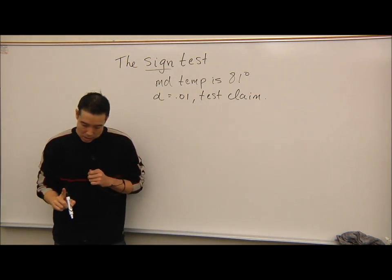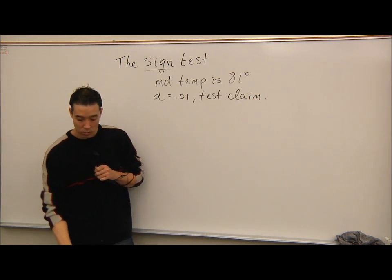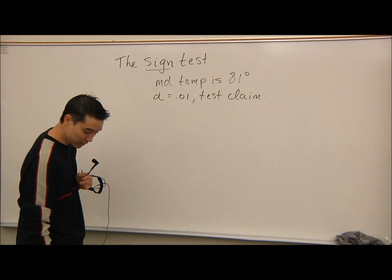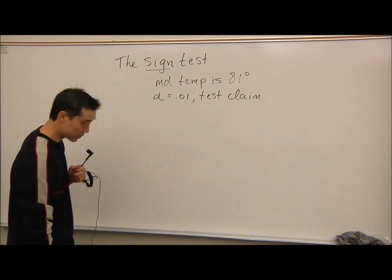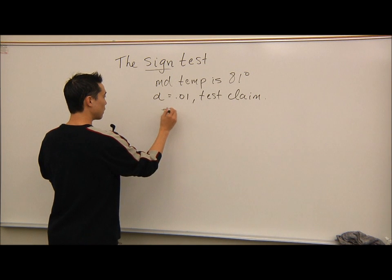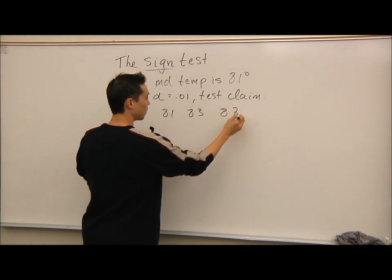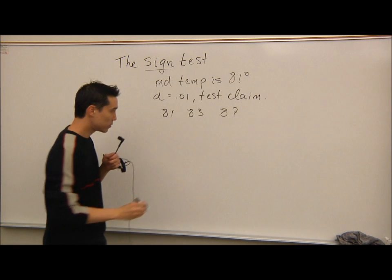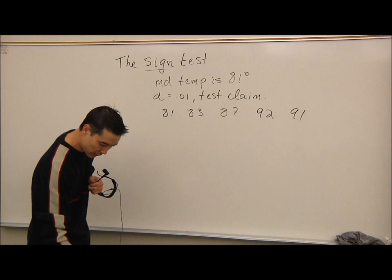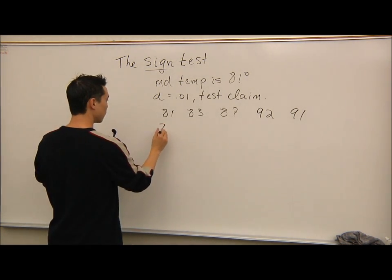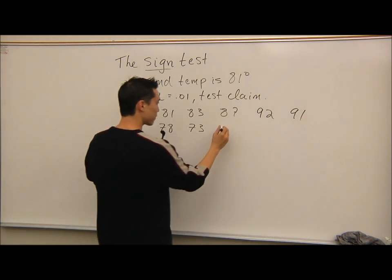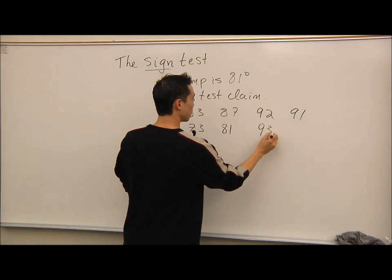We recorded 20 temperatures — 20 days there in Jacksonville. These were the actual recorded temperatures: 81, 83, 87, 92, 91, 78, 73, 81, 93, and 96.